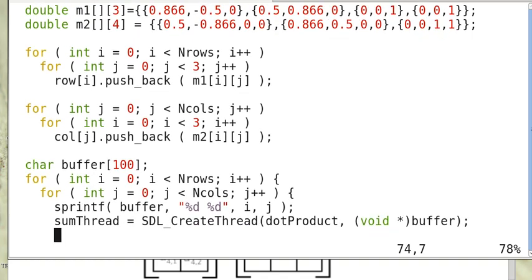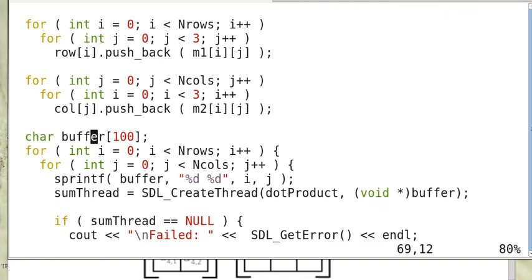And then we have a buffer and with the buffer we use sprintf to pass the information (i,j) to the thread. So (i,j) will be printed to buffer and then in the thread we use sscanf to extract it.